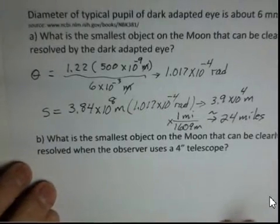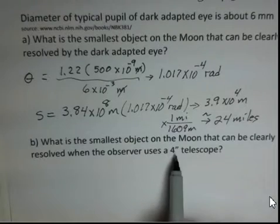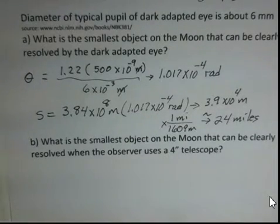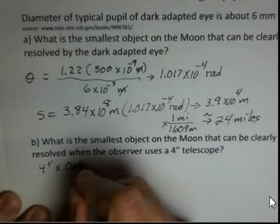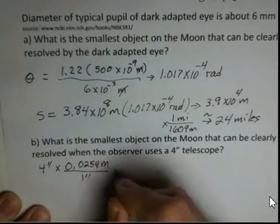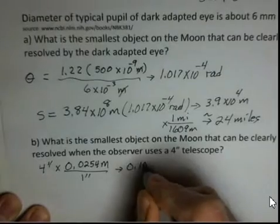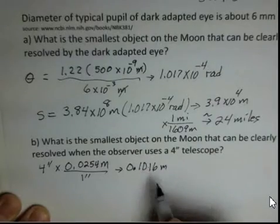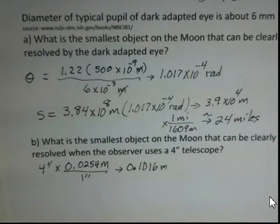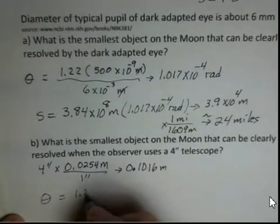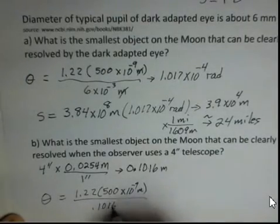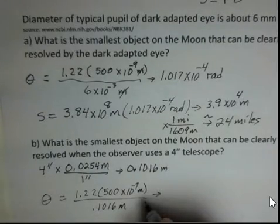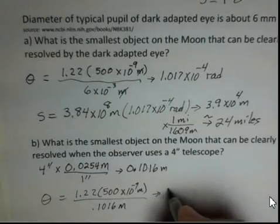So let's use a 4-inch telescope — a 4-inch diameter, referring to the diameter of the objective. We're in inches, but we need standard metric units, so we convert: 4 inches times 0.0254 meters per inch gives us 0.1016 meters, roughly 10 centimeters. Now calculating theta: 1.22 times 500 × 10⁻⁹ meters divided by 0.1016 meters gives us 6 × 10⁻⁶ radians.